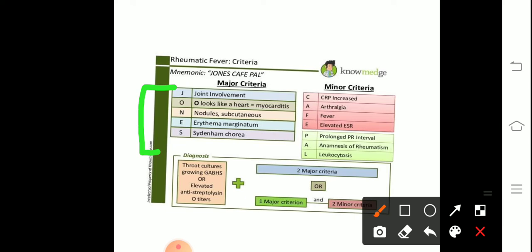तो अब हमारा mnemonic major criteria के लिए होगा JOHNS: J stands for joint involvement, O looks like heart that is myocarditis, H stands for nodules or subcutaneous nodules, N stands for erythema marginatum, and S stands for Sydenham's chorea.